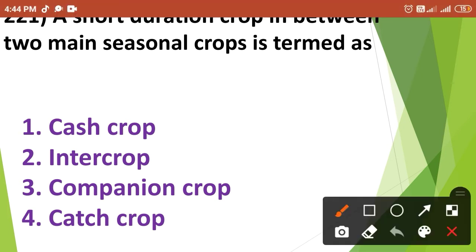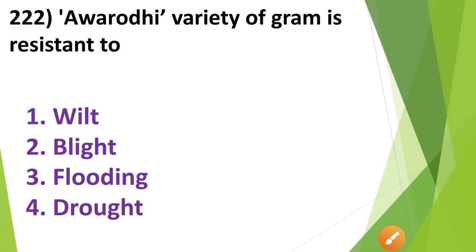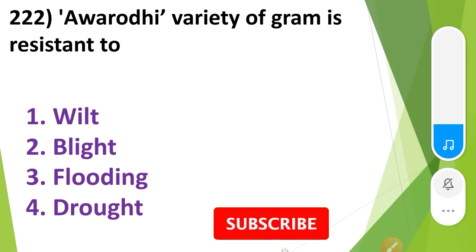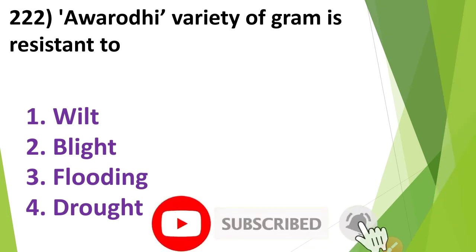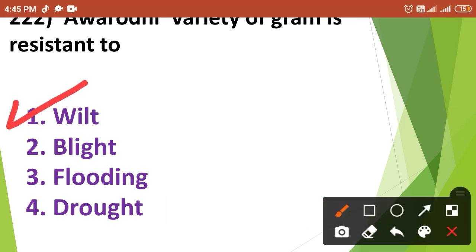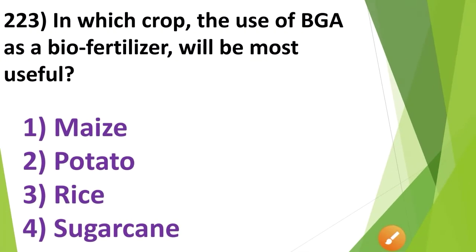The Avarodi variety of gram is resistant to: 1. Wilt, 2. Blight, 3. Flooding, 4. Drought. The correct answer is Option No. 1 — wilt.